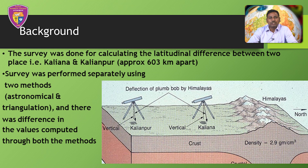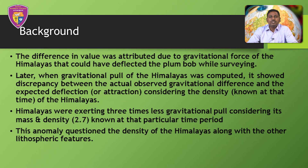The survey was conducted for calculating the latitudinal difference between two places, that is Kalyana and Kalyanpur. Kalyana was near the foothills of the Himalaya mountains and Kalyanpur was 603 kilometers apart from Kalyana in the south. The survey was done using two methods: the astronomical method and the triangulation method, and there were differences in the values obtained through both methods. This difference was of 5.23 seconds. The difference was attributed to the gravitational force of the Himalayas, which could have deflected the plumb line while surveying. Later, when the gravitational pull of the Himalayas was computed, it showed discrepancies — the Himalayas were exerting three times less gravitational pull considering their mass and density. This anomaly questioned the density of the Himalayas.